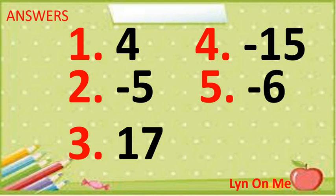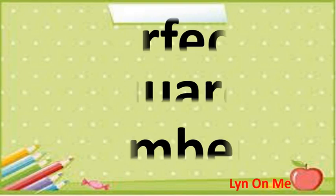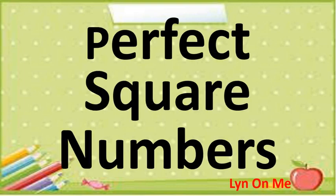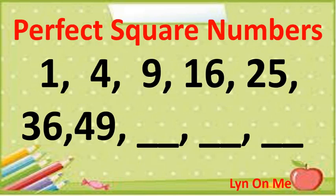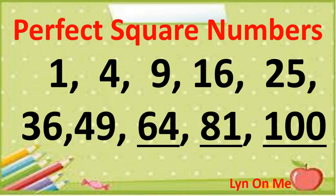Now let us review some concepts before we take up factoring difference of two squares. Are you familiar with this term: perfect square numbers? Here are some examples: one, four, nine, sixteen, twenty-five, thirty-six, forty-nine. What are the next three perfect square numbers after forty-nine? Sixty-four, eighty-one, one hundred. Do we have the same answers? Congratulations if yes.